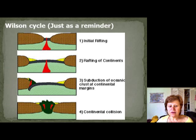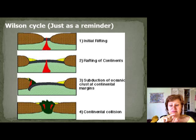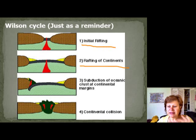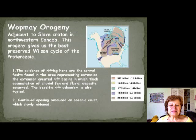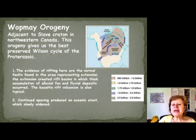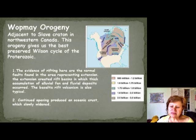Just a reminder: what is the Wilson cycle? That's the supercontinent cycle — about 300 to 350 million years for the full cycle. It starts with initial rifting, the continents spread apart, then subduction starts, and then continental collision. Those are the main steps of the Wilson cycle. The orogenies you should know are the Wopmay and the Trans-Hudson. The Wopmay is the first orogeny which actually shows every step of the Wilson cycle, and there are all the details here.